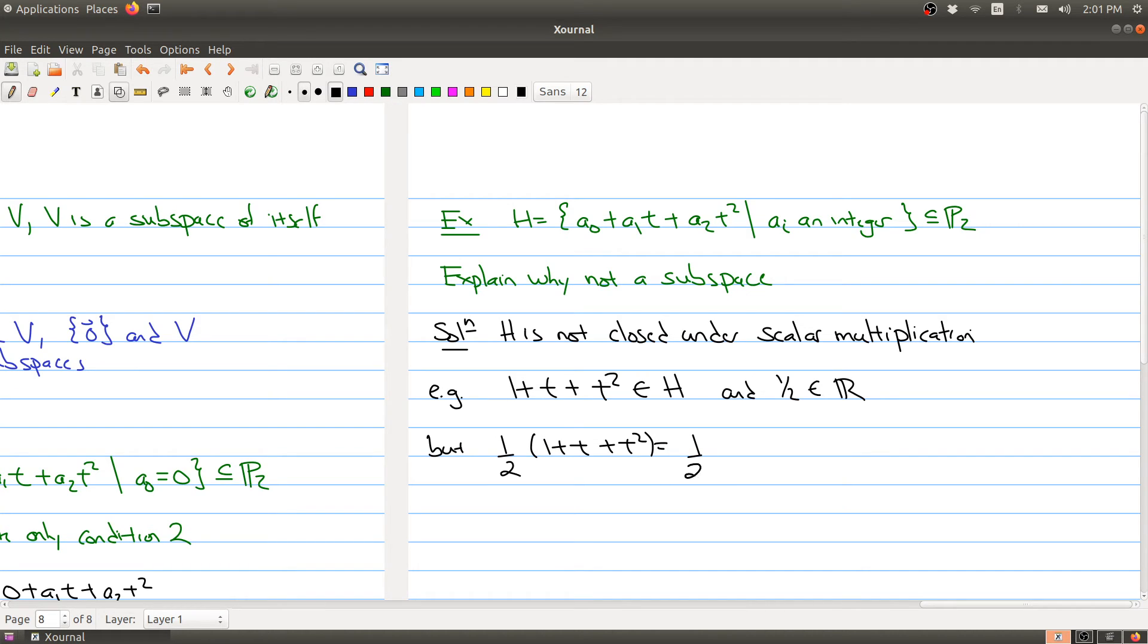But when you multiply these two things together, you end up with 1 half plus 1 half t plus 1 half t squared, which is not an element of H, because here is a polynomial where none of the coefficients are integers. So this fails to be a subspace.